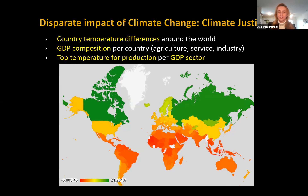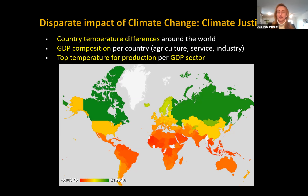My model starts with country temperature differences around the world. We also have different GDP compositions — different compositions of agriculture, service, and industry sector productivity in economic terms. In the literature, especially the agriculture literature, there is a top temperature for productivity per GDP sector. With these factors — country differences in starting ground on climate, GDP composition for productivity, and the top temperature for productivity — you can start mapping out the expected time horizons until a country reaches peak condition by climate for economic productivity.